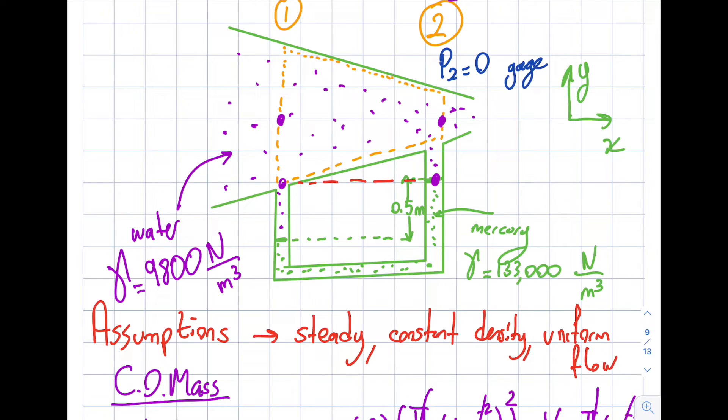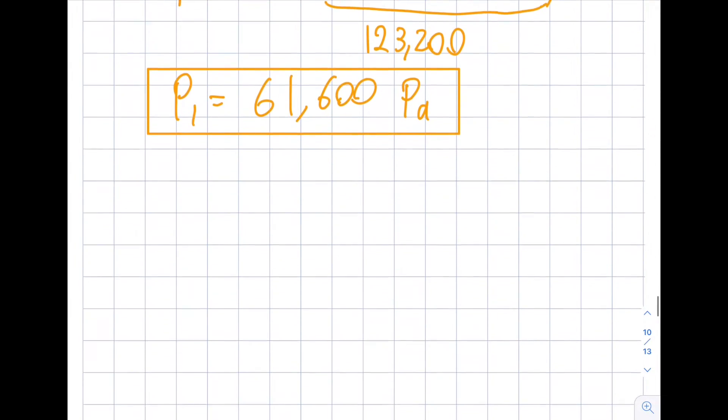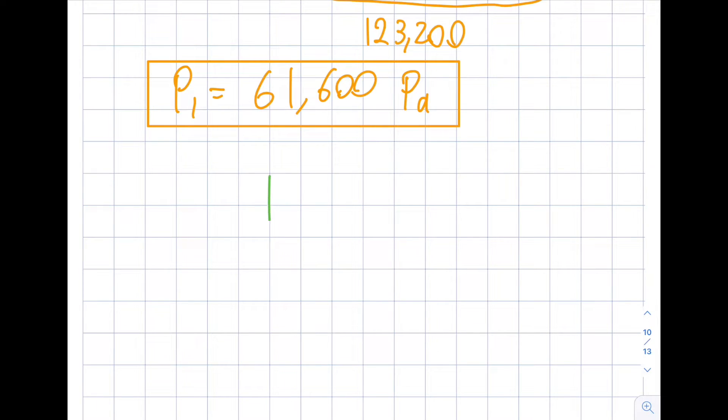So I'm going to redraw the free body diagram of my control volume. So the first force will be the one that I am interested in, and I'm going to call this Fx. That's what the question is asking me, anchoring force to hold this in place. Note there's something in here, I kind of know that this is going to be negative, right? Did you realize that?